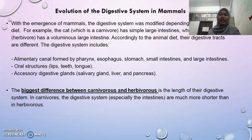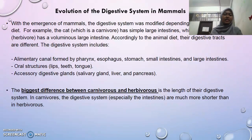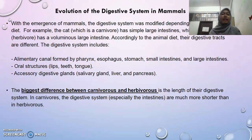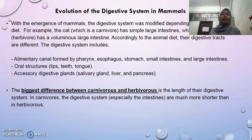The digestive system includes the alimentary canal formed by the pharynx, esophagus, stomach, small intestine, and large intestine. The alimentary canal starts from the mouth until the end of the anus. The next component is the oral structure, which consists of lips, teeth, and tongue. Lastly, there are the accessory digestive glands, which include the salivary glands, liver, and pancreas.